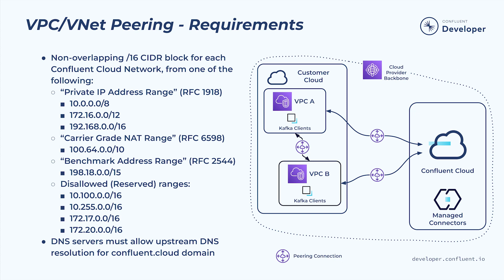The second option is the shared address space, also known as carrier-grade NAT, from RFC 6598. The third option is a benchmark address space, that's RFC 2544. There are also a set of address ranges that are explicitly excluded for use. Additionally, in order to resolve Confluent Cloud broker names, you need to allow DNS resolution to the upstream internet. You can't block your DNS infrastructure from accessing the authoritative DNS servers for Confluent Cloud, which are hosted by us on the internet.